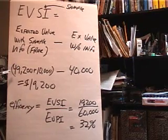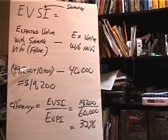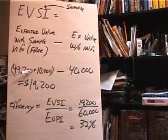So, we take the $49,200 that we calculated from our decision tree in the previous video, add back the cost of the study, $10,000, to get $59,200.